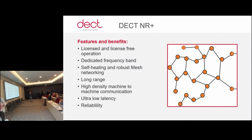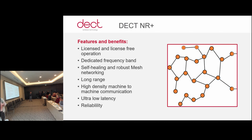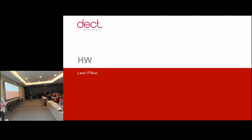The main features and benefits of DECT NR+: it can be licensed but also a license-free technology. It is initially available in the dedicated DECT frequency band but can also operate in other frequency bands below 6 GHz. It is self-healing and robust mesh-capable, covers a long range, offers high density, and fulfills the massive machine-type communication and low-latency requirements from IMT 2020. It is also very reliable and robust. With that summary, I hand over to Lauri Pikkiwi.